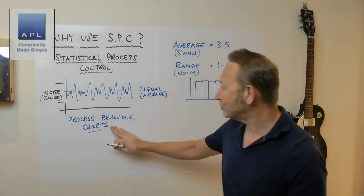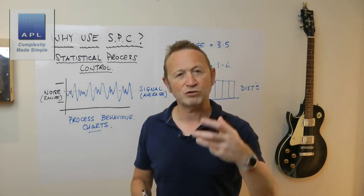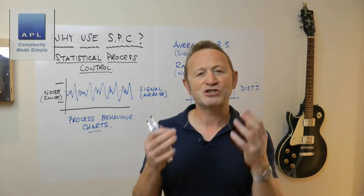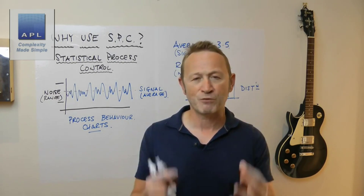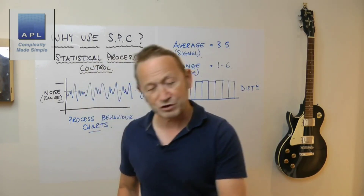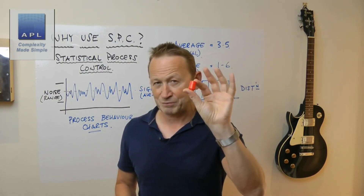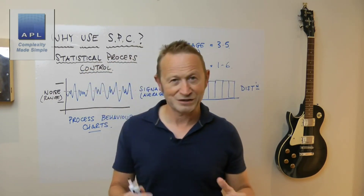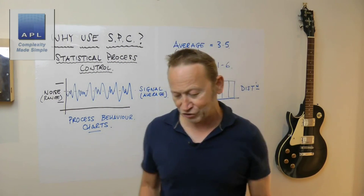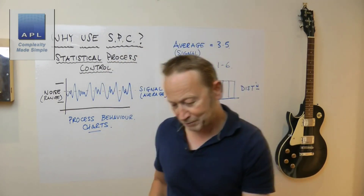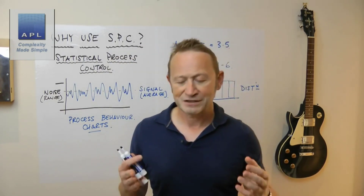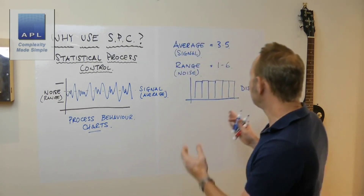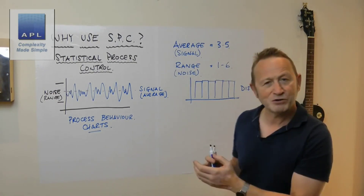Those three things — signal, noise, and distribution shape — are my process behavior, my natural process behavior. We use the natural process behavior to decide if something is wrong with the process. The chart is not telling you whether a part is a problem — it's telling you whether the process has a problem, whether its behavior has changed. For instance, if I took my random number generator and rolled a seven...